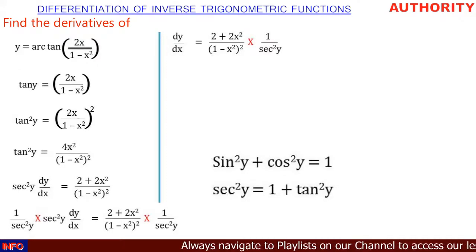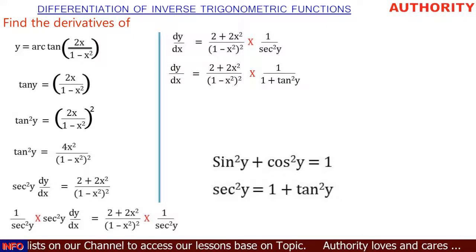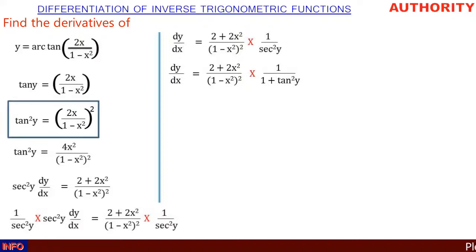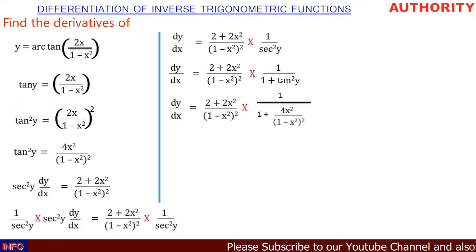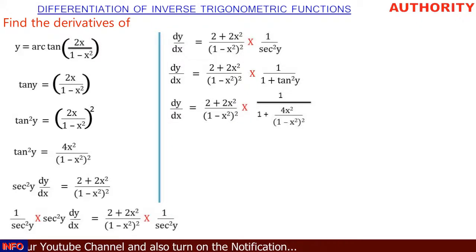That means we have dy/dx equals 2 plus 2x squared all over (1 minus x squared) squared, times 1 all over 1 plus tan squared y. But when we started, we said that tan squared y equals 4x squared all over (1 minus x squared) squared, so we can replace tan squared y with that value. In the function, dy/dx equals 2 plus 2x squared all over (1 minus x squared) squared, times 1 all over 1 plus 4x squared all over (1 minus x squared) squared.